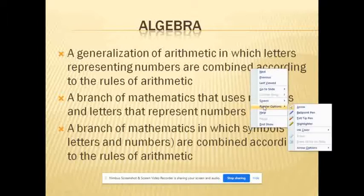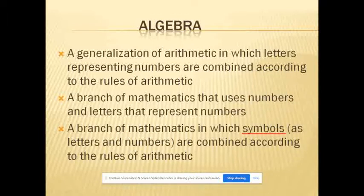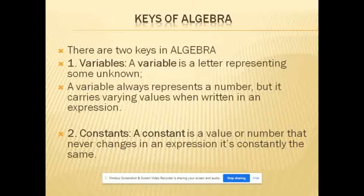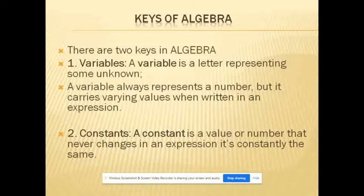The word symbols means letters and numbers. Letters or literals are alphabets; numbers are numerical values. There are two keys in algebra: variables and constants. A variable is a letter representing some unknown — it always represents a number. A constant is a value or number that never changes in an expression; it constantly remains the same.